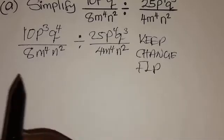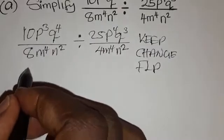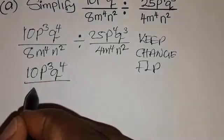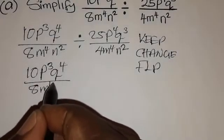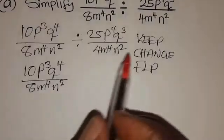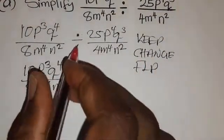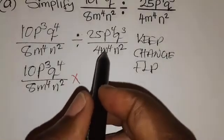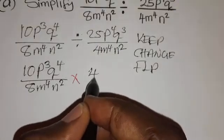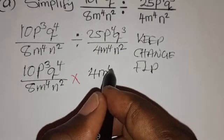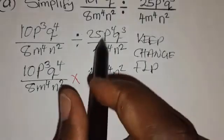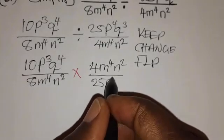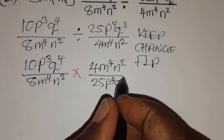We are going to keep the first fraction: 10p cubed q to the power 4 over 8m to the power 4 n squared. Then change — we change the division symbol to multiplication. And immediately we flip: the denominator becomes the numerator, so we have 4m to the power 4 n squared over 25p to the power 4 q to the power 3.